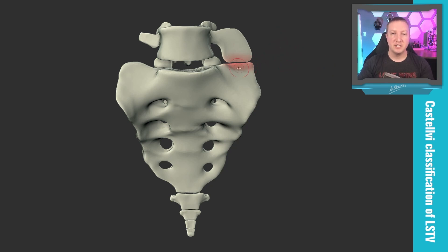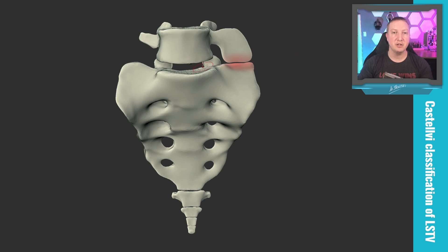Type 3 is when the transverse process is actually fused and fully sacral in function, because you have bony continuity between the transverse elements. When you have these transitional segments, the disc is typically going to be hypoplastic. So for Type 3, I'm going to bring the L5 segment down to show some continuity.